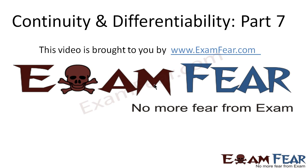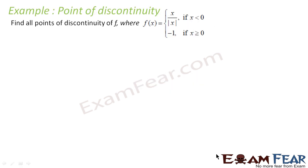Hello friends. This video on continuity and differentiability part 7 is brought to you by examfear.com. Please make sure that you have watched part 1 to part 6 before watching this video. Here we have to find the point of discontinuity where f(x) is equal to x by |x| for x less than 0, and is equal to minus 1 for x greater than or equal to 0.